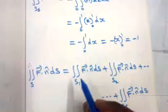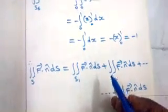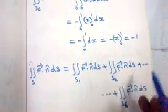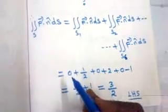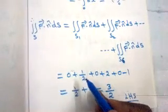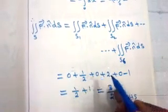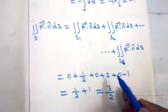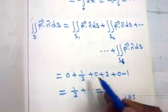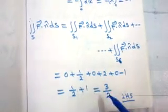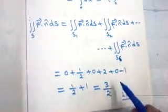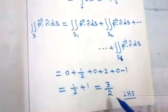The total surface integral (LHS) equals the sum over all six faces: 0 + 1/2 + 0 + 2 + 0 + (−1) = 1 + 1/2 = 3/2. So the LHS of the Gauss Divergence Theorem is 3/2. Now computing the RHS.